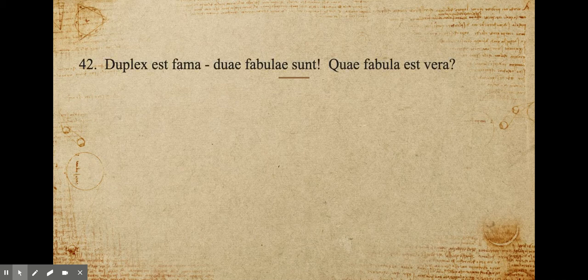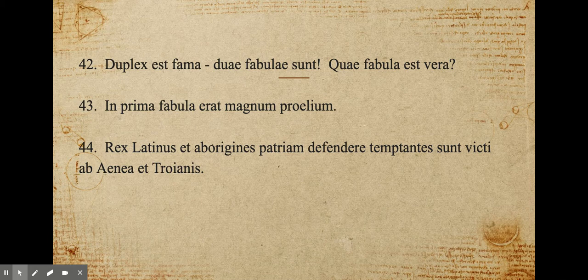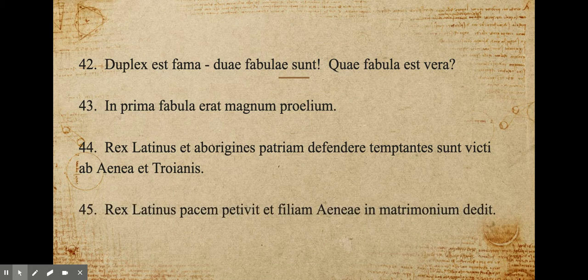Duplex est fama. There are two stories. Which story is true? In the first story there was a big battle. Rex Latinus et aborigines patriam defendere temptantes — a nice PAP, trying to defend the fatherland — were conquered by Aeneas and the Trojans. King Latinus sought peace and gave his daughter to Aeneas in marriage.